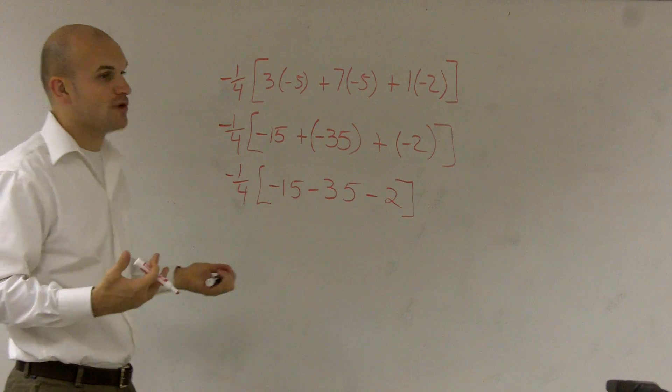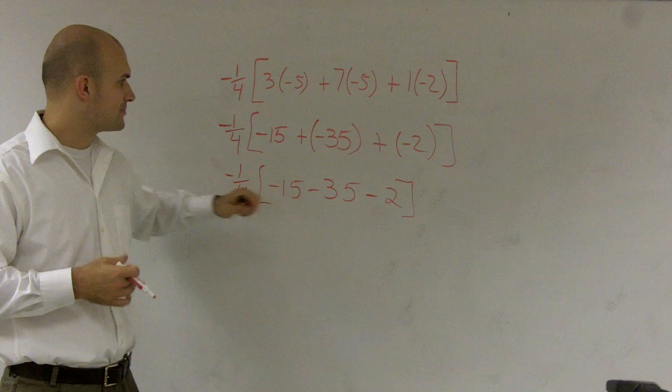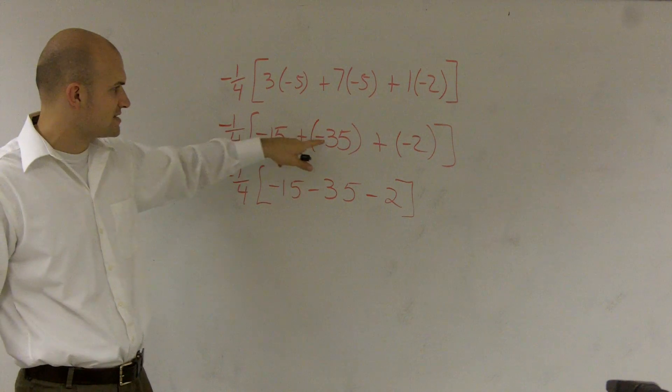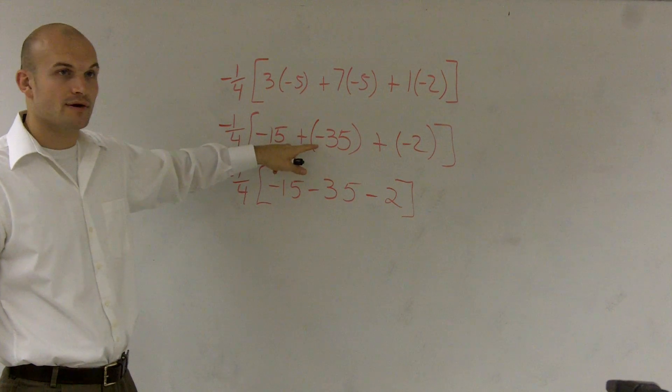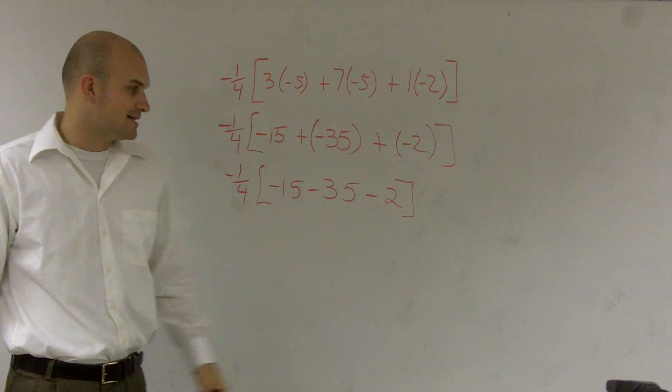If you have trouble adding and subtracting with negative numbers, this might be difficult. But if you look at this, -15 plus -35 gives me -50, plus -2 gives me -52. So that's -1/4 times -52.